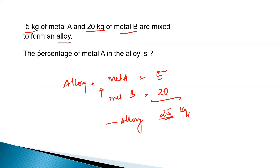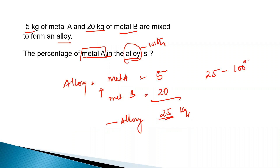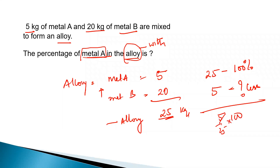The question asks: what is the percentage of metal A in the alloy? They are asking us to compare metal A's weight with the alloy weight. The alloy weight is considered to be 100 percent. Applying chain rule, metal A is definitely less than 100 percent. So the answer is 5 divided by 25 into 100, which gives 20 percent.